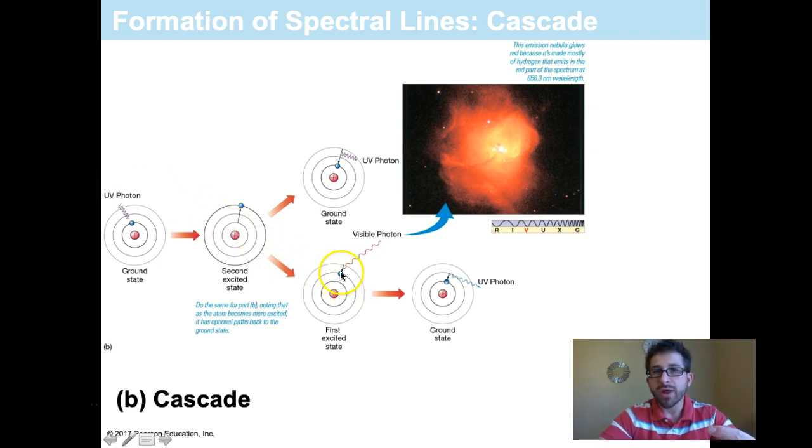Or we could have it drop down to some sort of an intermediate state, like this one, where it produces a visible photon of light. The first excited state. So that then can drop down to the ground state, producing, yet again, a second emission line.